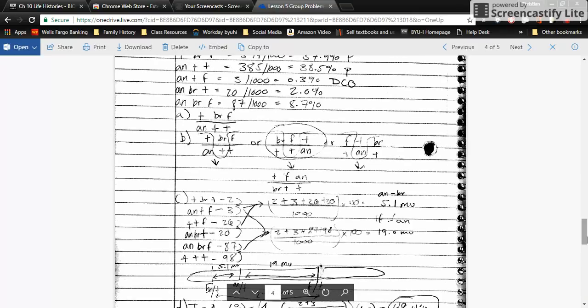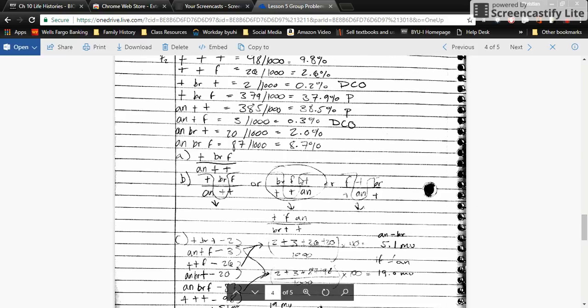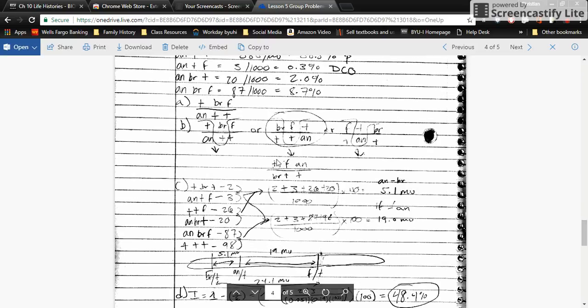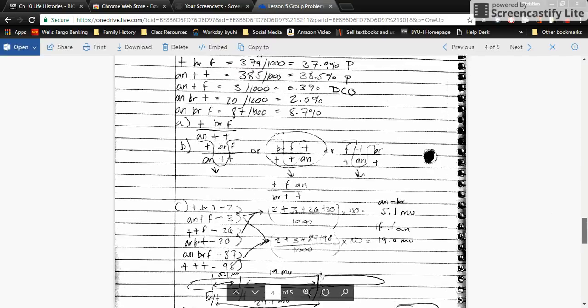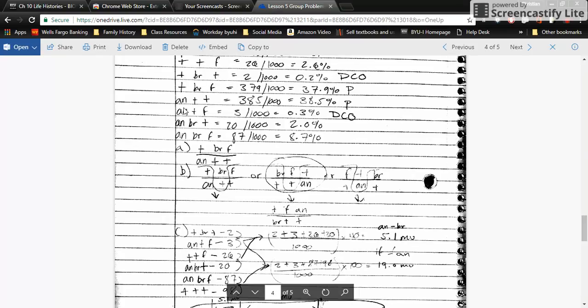For part B, to find the gene order, we're doing the double crossover, seeing which one gives us these genotypes with the lowest percentages. It will be this middle one right here. The gene order will be BR F wild on top and wild wild AN on the bottom. I showed you what would happen if you actually did that double crossover. You'll get the same thing as these double crossovers: AN wild F in this order, and wild BR wild, which here becomes BR wild wild.